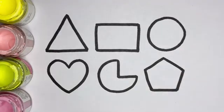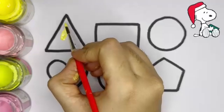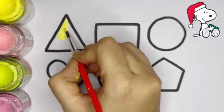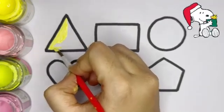Now let's color the shapes. Yellow color triangle. This is triangle, yellow color.